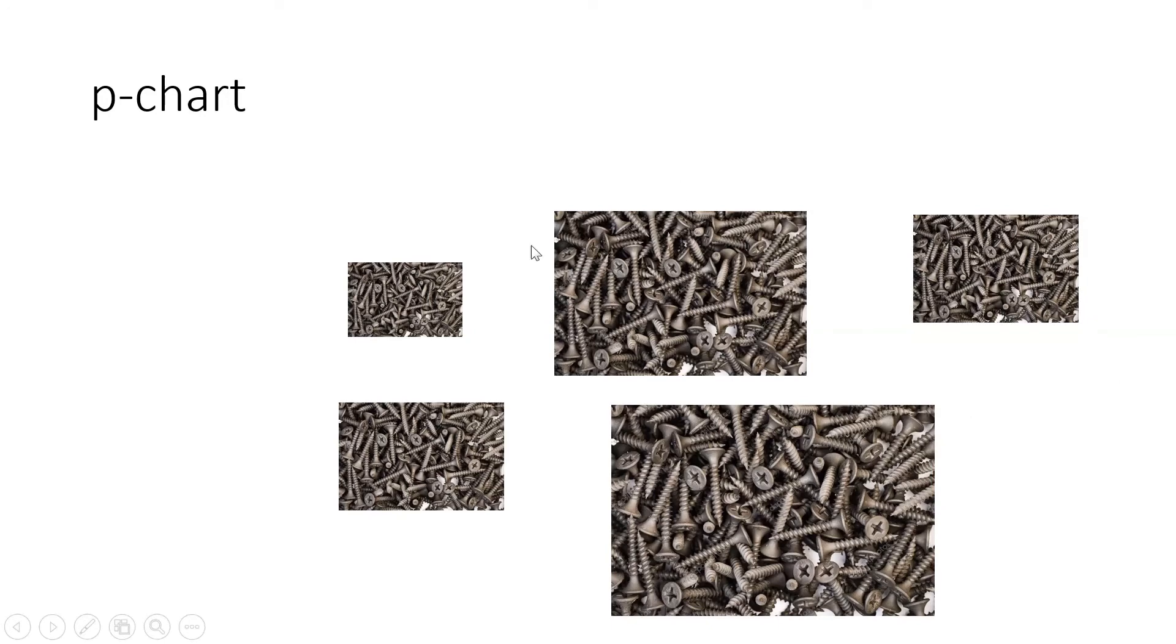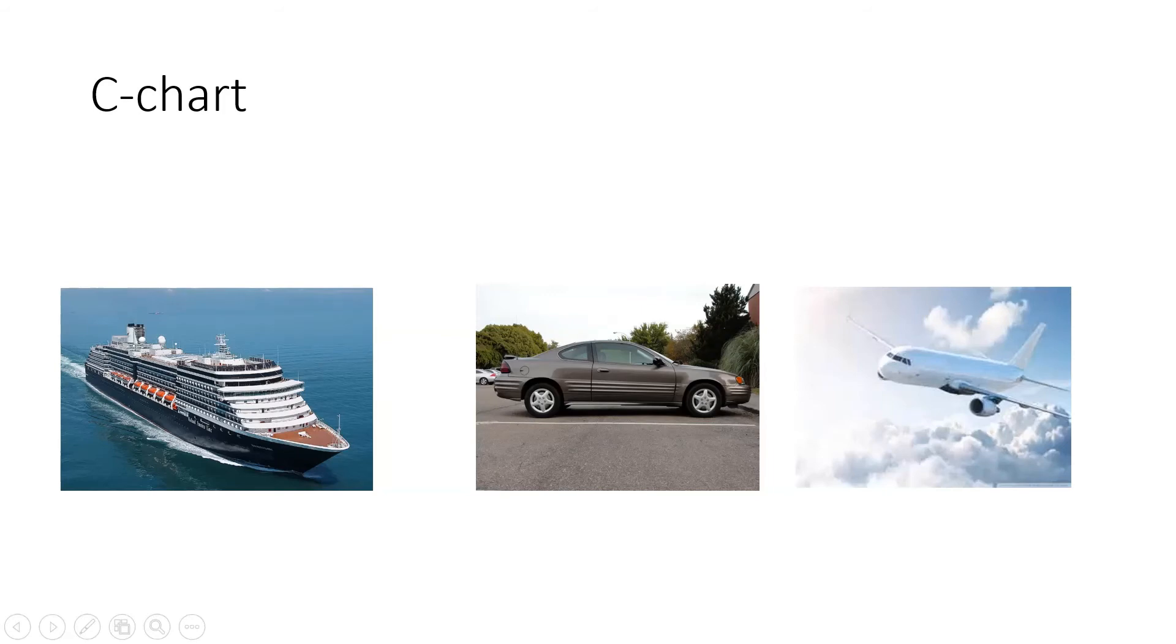P-chart if the sample size is different. If you inspect different number of samples from different lots, then definitely it's a p-chart situation. Now c-chart, on the other hand, are things that follow traditionally Poisson distribution.